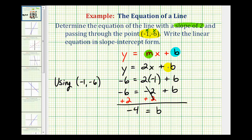And now that we know the value of b, we can write the equation of the line in slope-intercept form. We're going to substitute negative four for b, but instead of writing plus negative four, it's more common to write minus positive four. So the equation of the line with slope of two passing through the point negative one, negative six, would be y equals two x minus four.